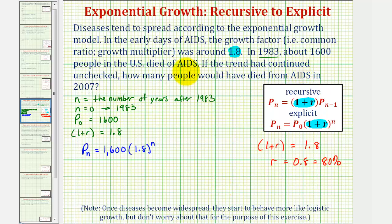Now to answer the question, we want to determine how many people would have died from AIDS in the year 2007 if the trend continued unchecked. We need to determine what value of n represents the year 2007. For 2007, n would be equal to 2007 minus the base year of 1983, which is equal to 24.